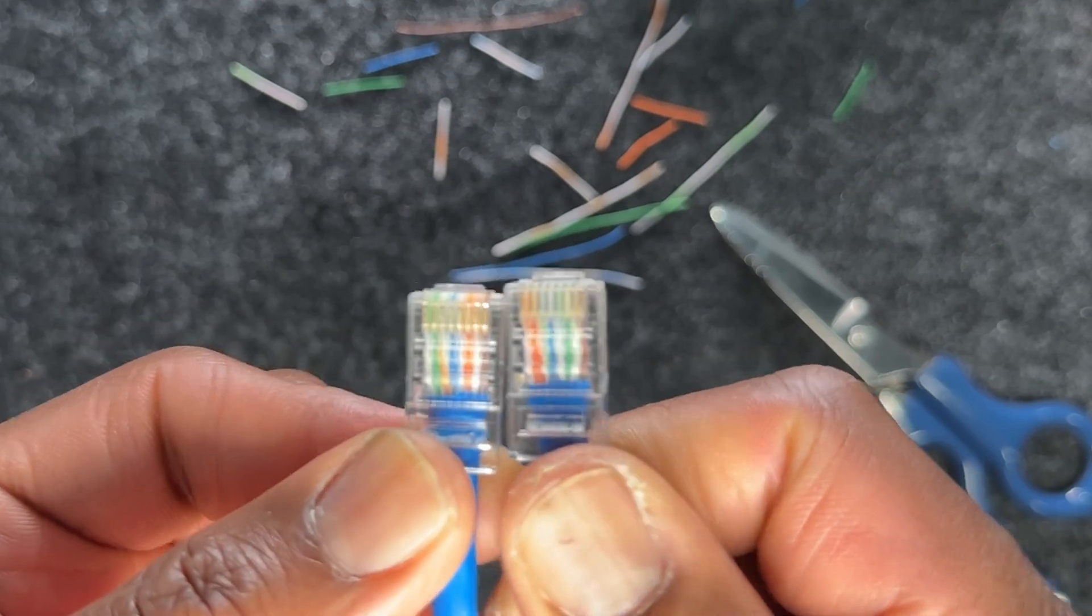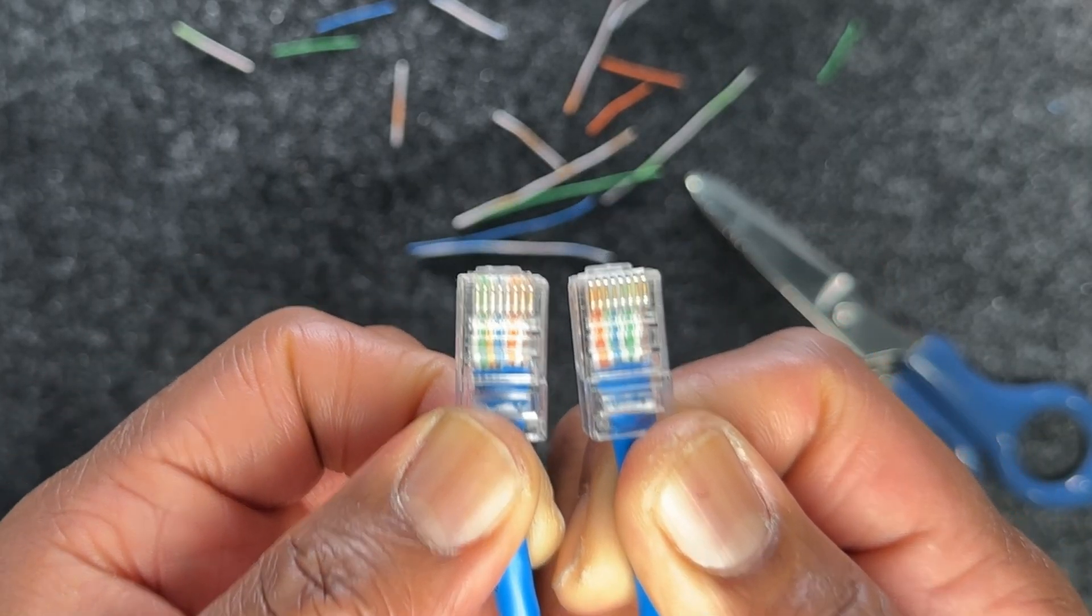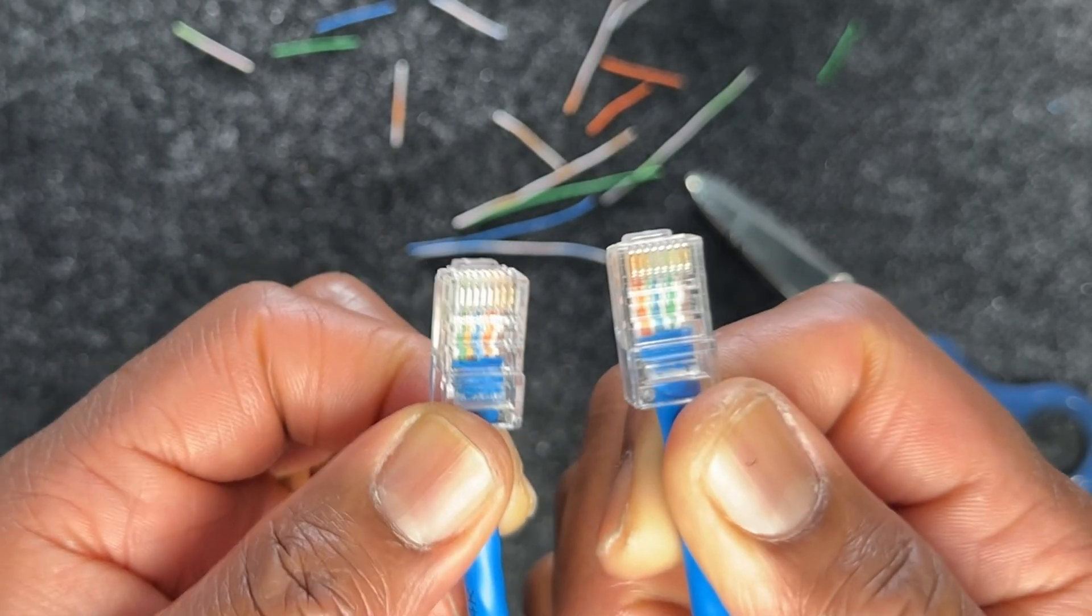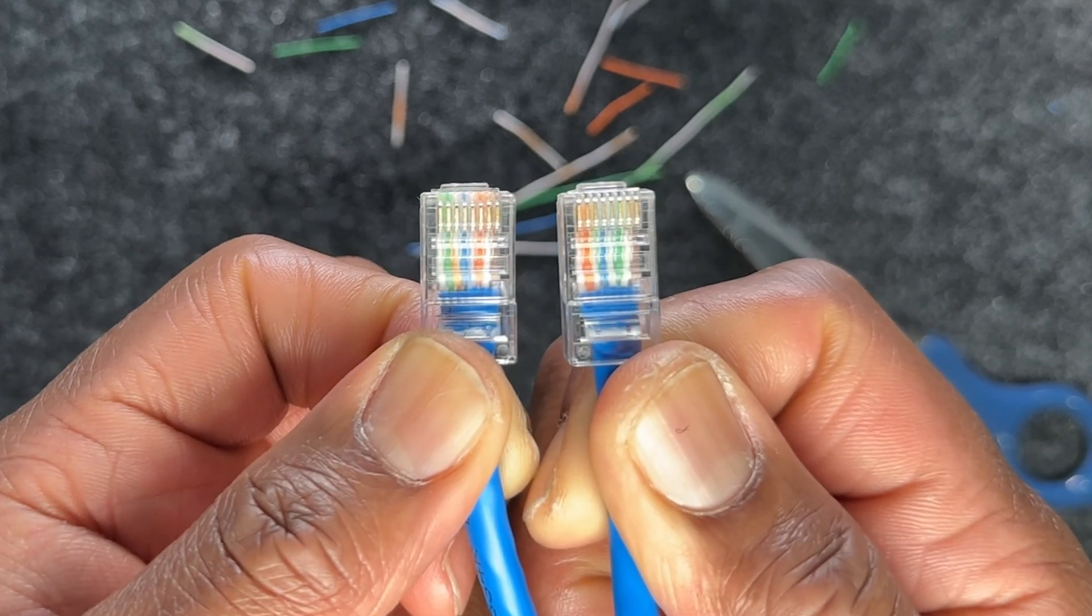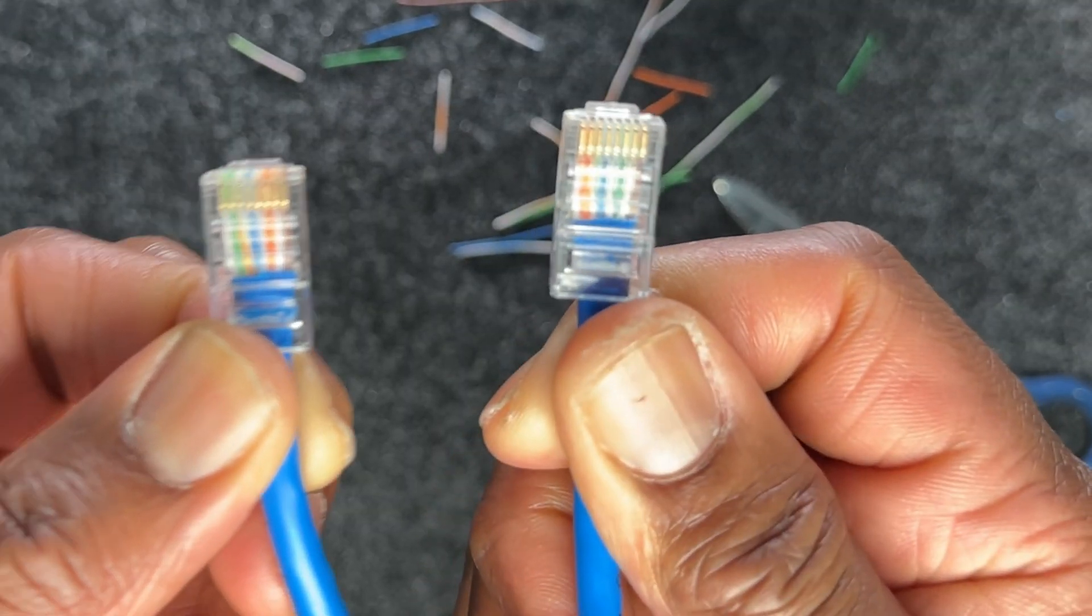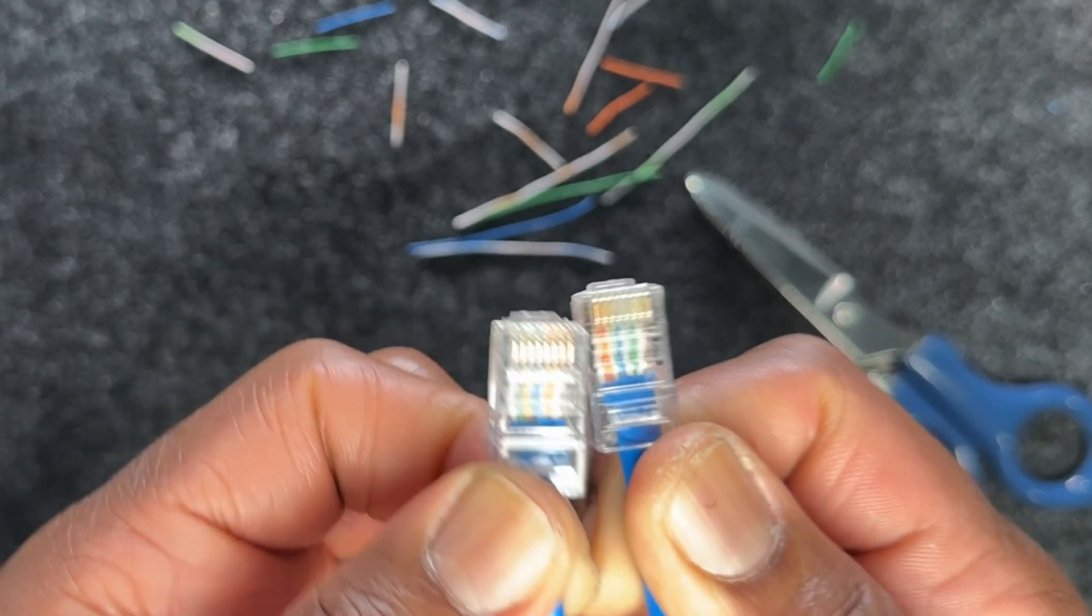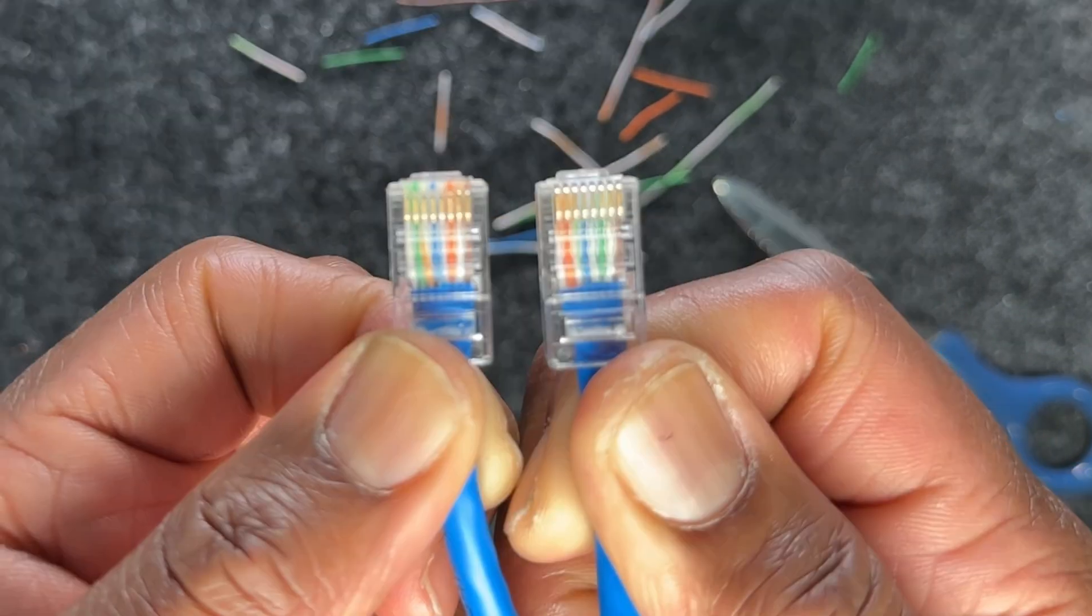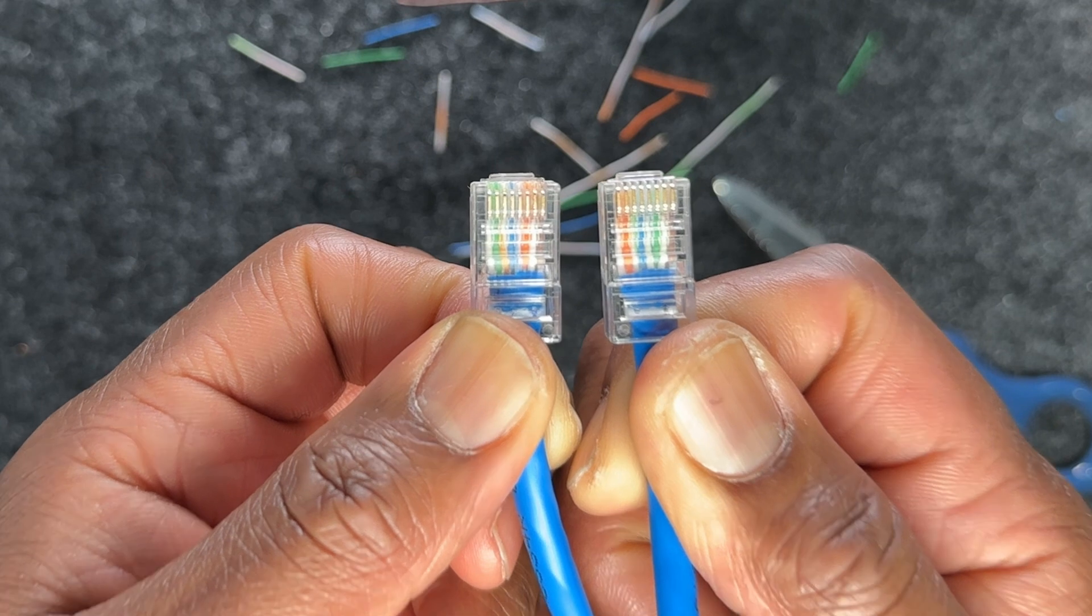Let's take a quick look at what we ended up doing. When you look at both of them side by side, notice that the one on this side starts with white green and solid green. The one to the right starts with white orange and solid orange and it just keeps going. This is how a crossover cable is done.